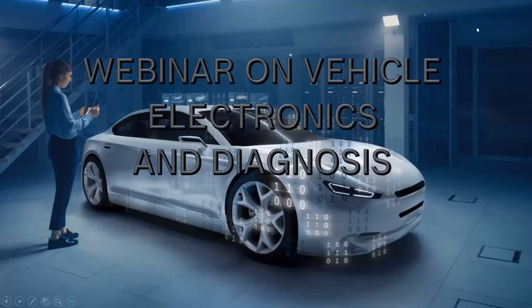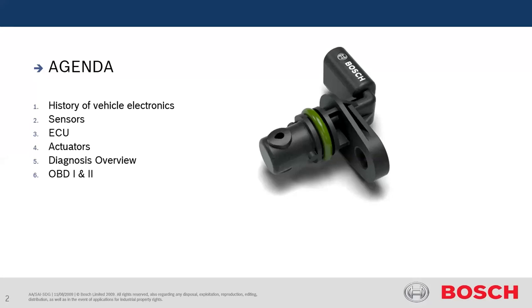This discussion is totally on vehicle electronics. We'll go through the basics of vehicle electronics which are available on our new vehicles, the diagnosis process, and we'll discuss that. Today's agenda is based on five or six things: a history of vehicle electronics, then we'll discuss the soul of vehicle electronics which is the sensors, ECU, and actuators. After that we'll go through the diagnosis overview and OBD1 and OBD2.